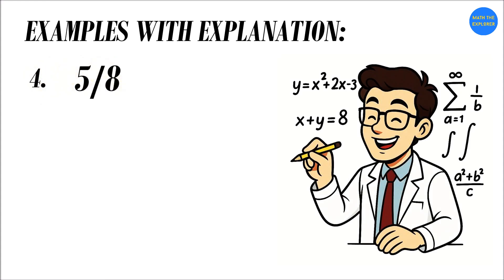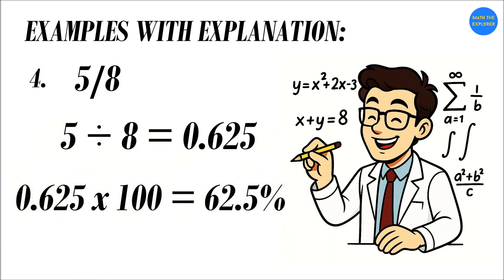Five over eight. Divide five by eight. Five divided by eight equals 0.625. Next, multiply by 100. 0.625 times 100 equals 62.5 percent. So, five-eighths equals 62.5 percent. Sometimes percentages have decimals, especially when the fraction doesn't divide evenly.